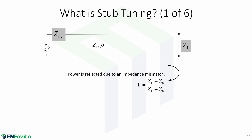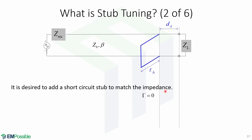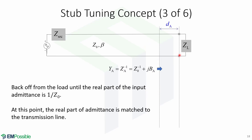Now we will take a look at stub tuning. Remember the formula for the reflection coefficient — this formula means that power is reflected due to an impedance mismatch between the load and the transmission line. For stub tuning, it is desired to add a short-circuit stub to match the impedance. The distance from the load to the stub is going to be dA, and the length of the stub is going to be lA. This stub will yield a reflection coefficient of zero. Recalling the impedance transformation lecture, we can calculate the distance from the load to the stub by walking away from the load until the real part of the input admittance is 1/Z₀, which is given by this expression.